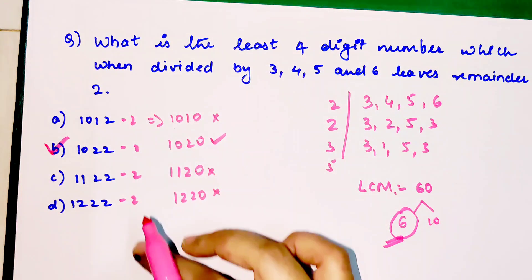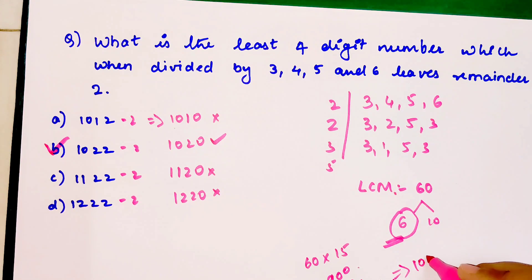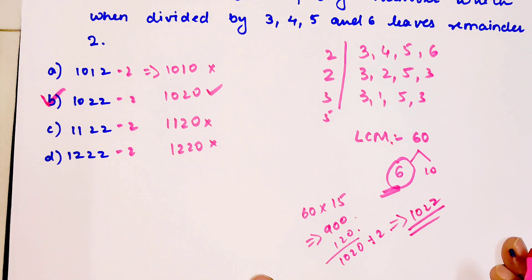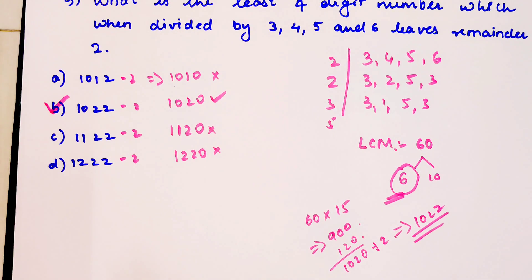You could have also taken 60's table and multiplied by 15 to get 900, then add 120 to get 1020, then add 2 to get 1022. But not everyone remembers that 60 × 15 = 900. That's why the previous method works even if you're not very good at tables. You can still do really well in these entrances - do not panic, just use your basic understanding.